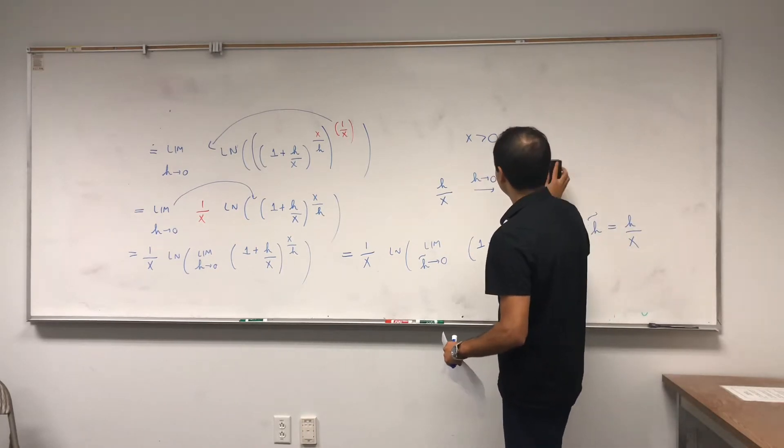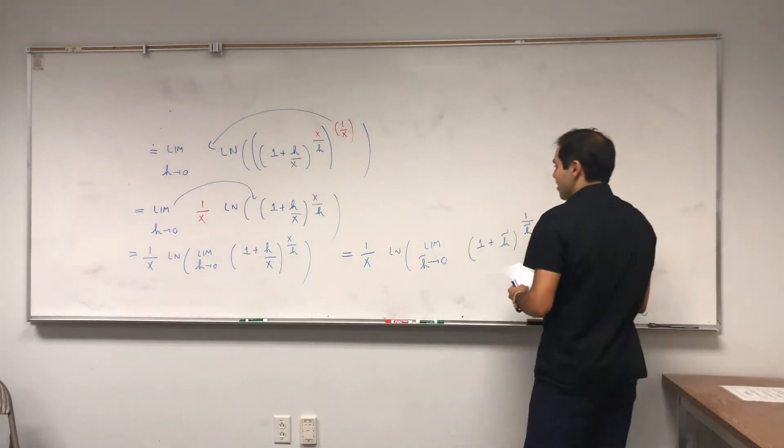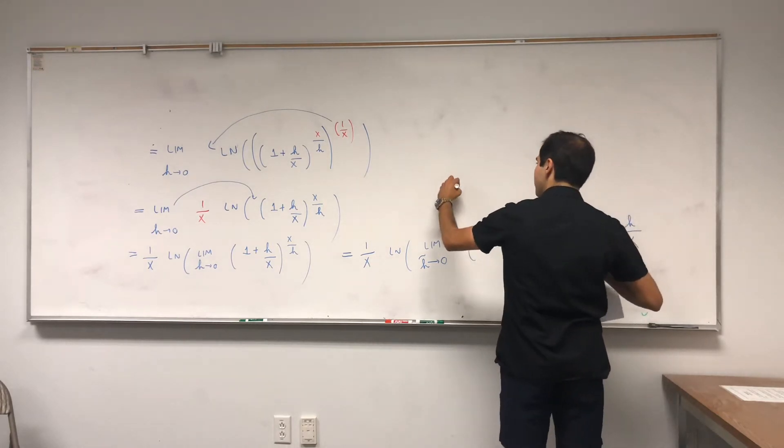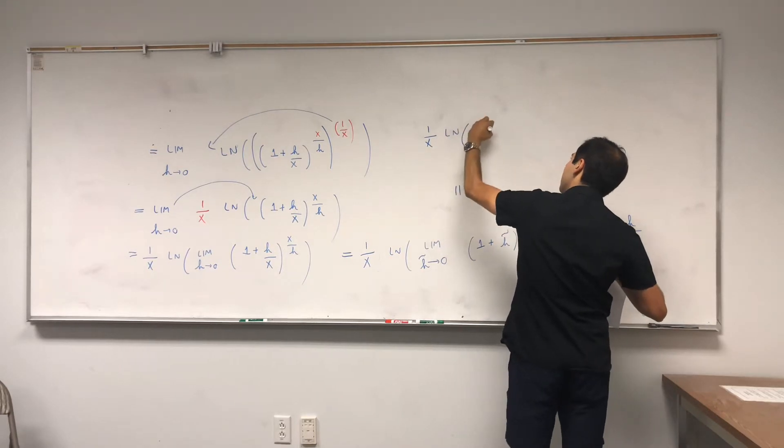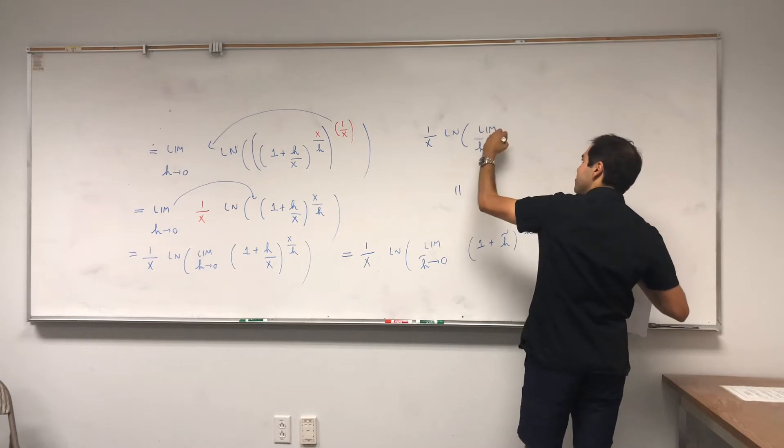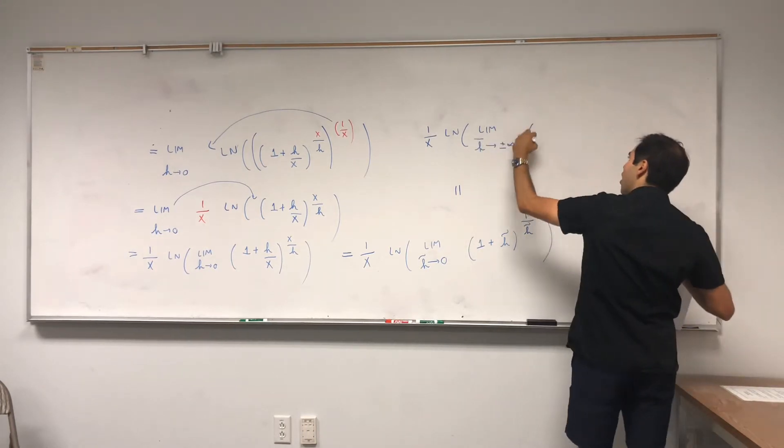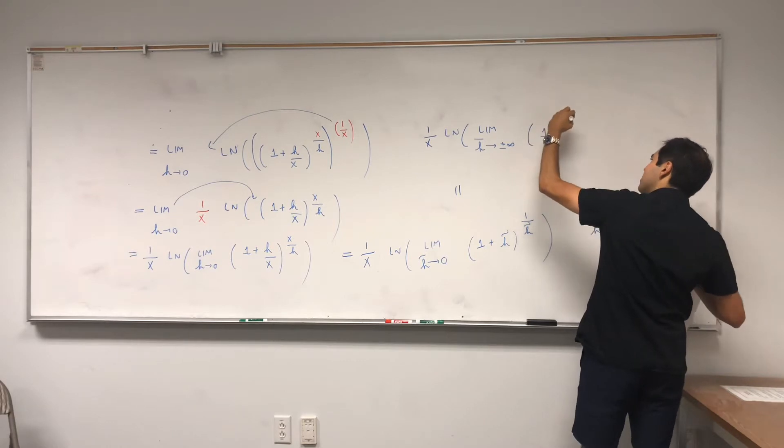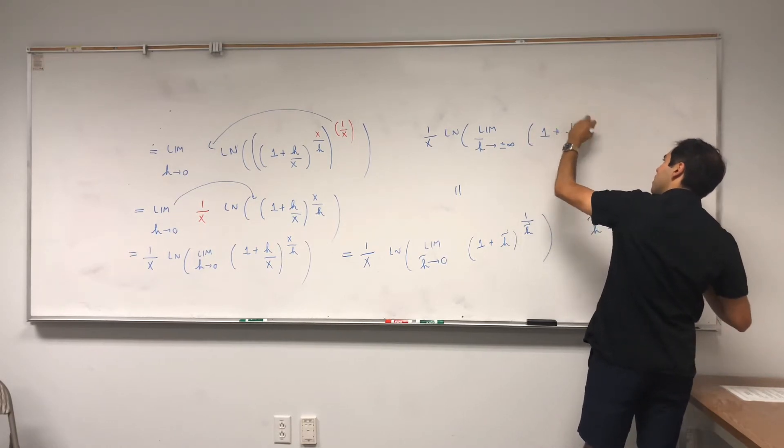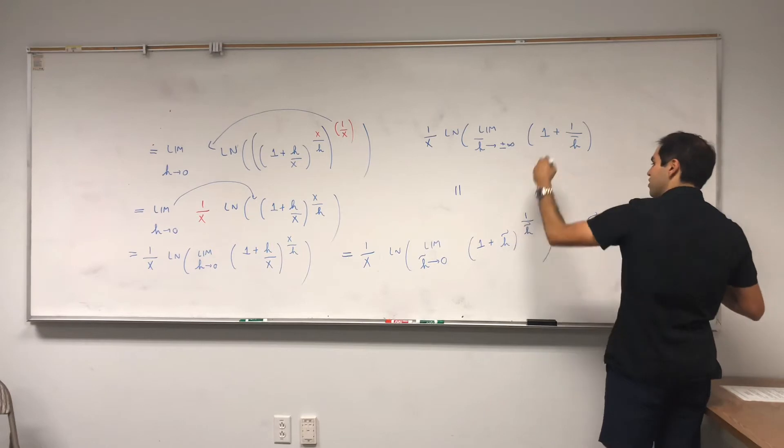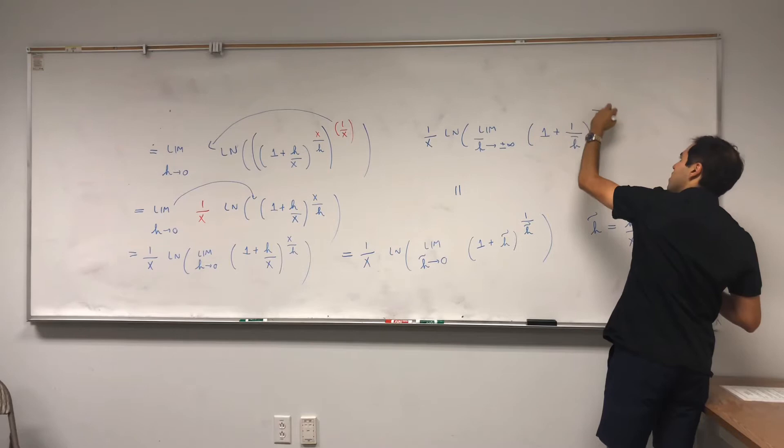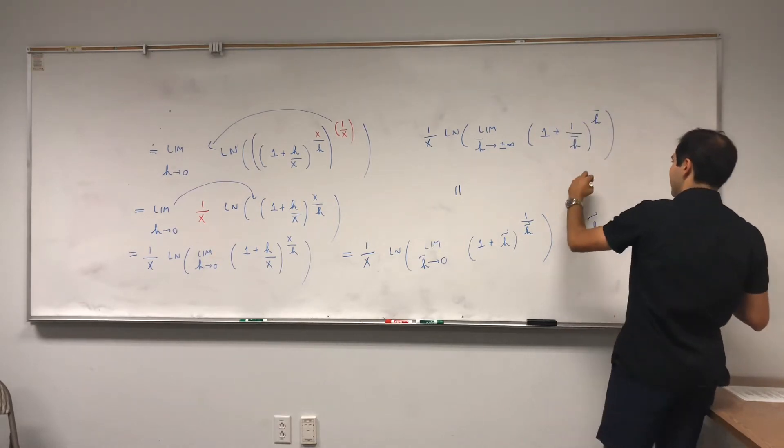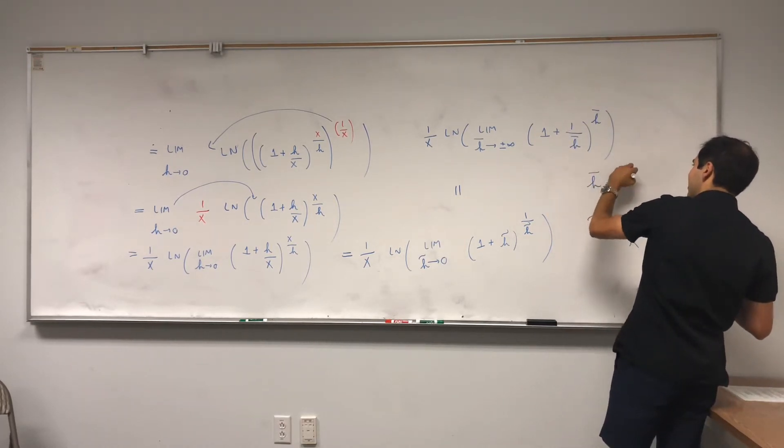I guess minus infinity, but it's the same thing. So this becomes essentially 1 over x ln of limit, let's call it h bar, goes to plus or minus infinity of 1 plus 1 over h bar to the h bar. Where I get h bar, that's 1 over h squiggle.